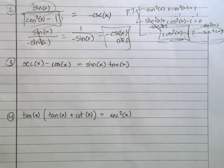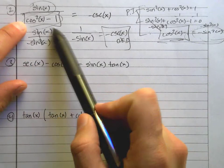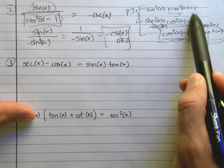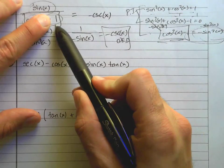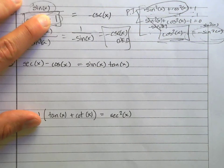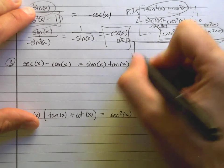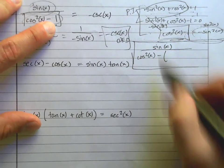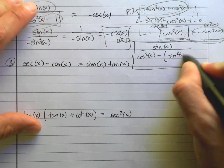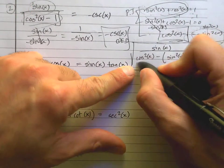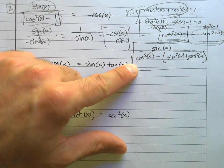There are actually a couple of different ways to substitute here. Beatrice had a clever idea: since sine squared plus cosine squared equals 1, she replaced the 1 in the denominator with sine squared plus cosine squared. So instead of cosine squared minus 1, you write cosine squared minus (sine squared plus cosine squared). The cosine squared terms cancel, leaving sine over negative sine squared — same result as before.